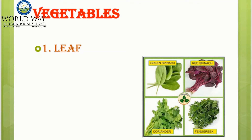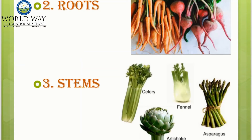The vegetables which are made from the leaf include green spinach, red spinach, coriander, and fenugreek. Some of the vegetables which we eat as roots are radish, turnip, and carrot.